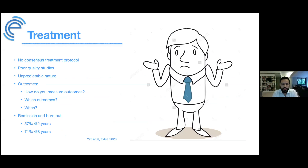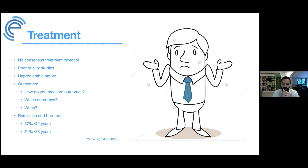There is no single consensus treatment protocol for Meniere's disease — actually, there are three consensus protocols, which means we don't agree. A key reason: the studies are poor quality, inconsistent in their measures and definitions. The definition of Meniere's disease has itself changed over time, complicating interpretation.